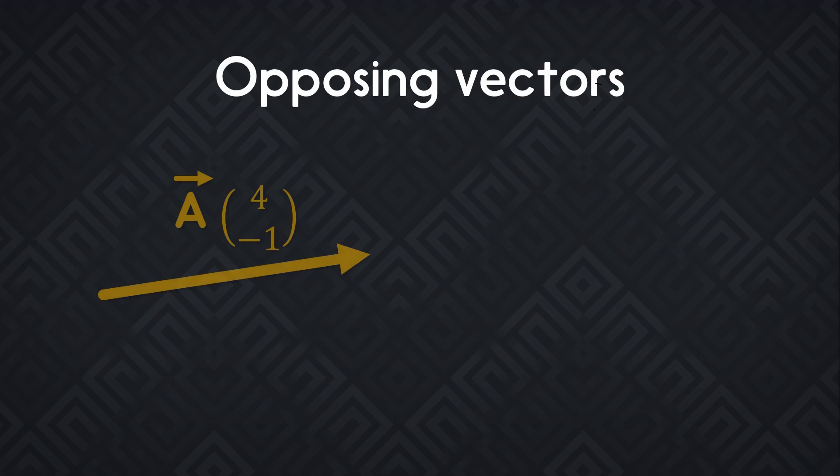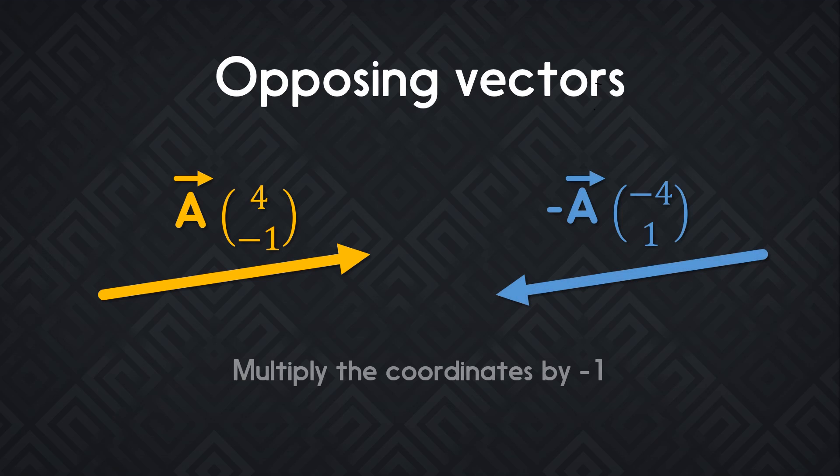You can easily calculate the opposite of a vector, that's a vector of the same length, but going in the other direction. For that, you just multiply its coordinates by minus 1. Or in Godot, you would multiply the vector directly by minus 1. If vector A represents a vector pointing from the player to the enemy, the opposite vector represents one that goes from the enemy to the player.